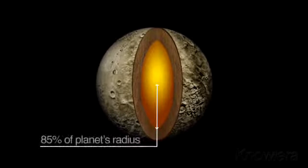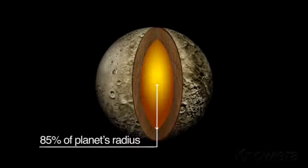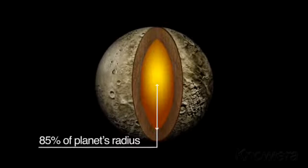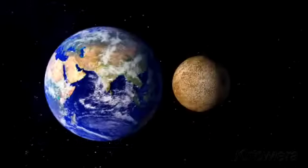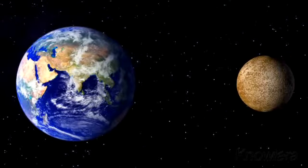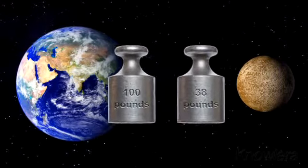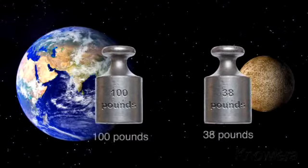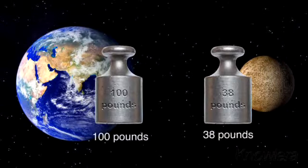The planet's small mass means its force of gravity is barely a third of the Earth's. A 100-pound person on Earth would weigh only 38 pounds on Mercury.